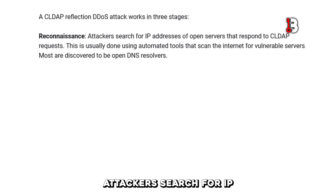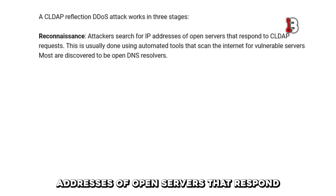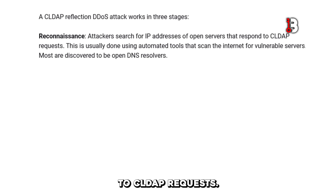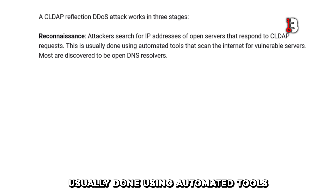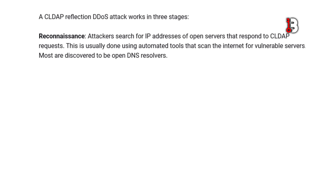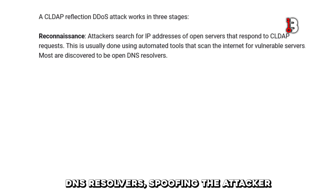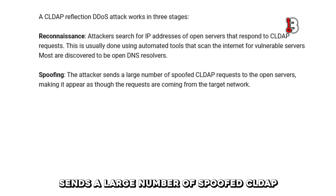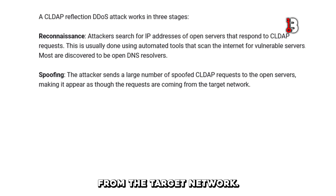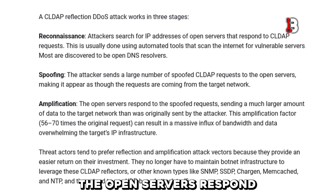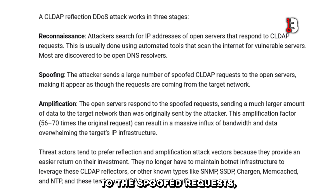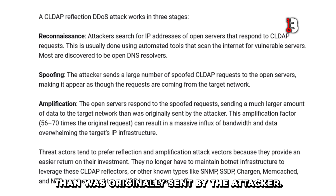Reconnaissance: attackers search for IP addresses of open servers that respond to CLDAP requests. This is usually done using automated tools that scan the Internet for vulnerable servers. Most are discovered to be open DNS resolvers. Spoofing: the attacker sends a large number of spoofed CLDAP requests to the open servers, making it appear as though the requests are coming from the target network. Amplification: the open servers respond to the spoofed requests, sending a much larger amount of data to the target network than was originally sent by the attacker.